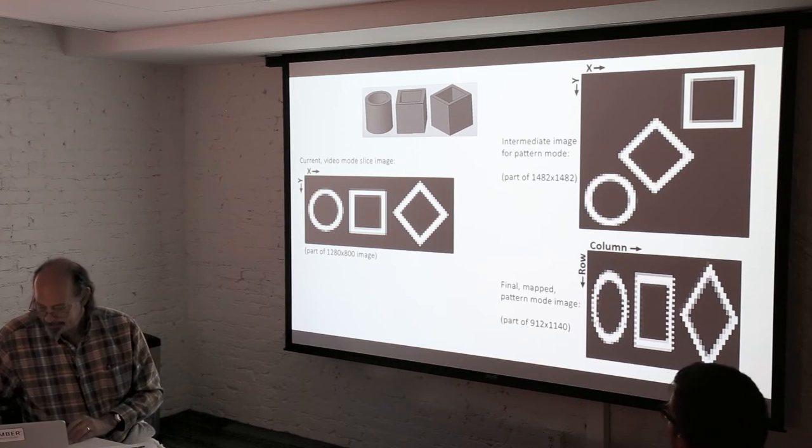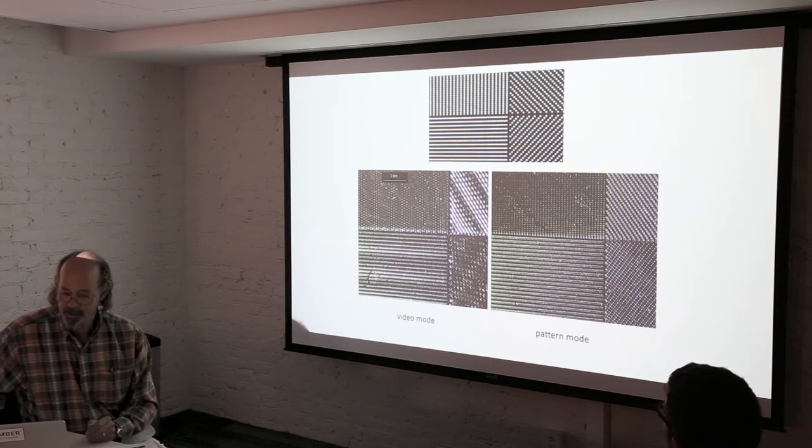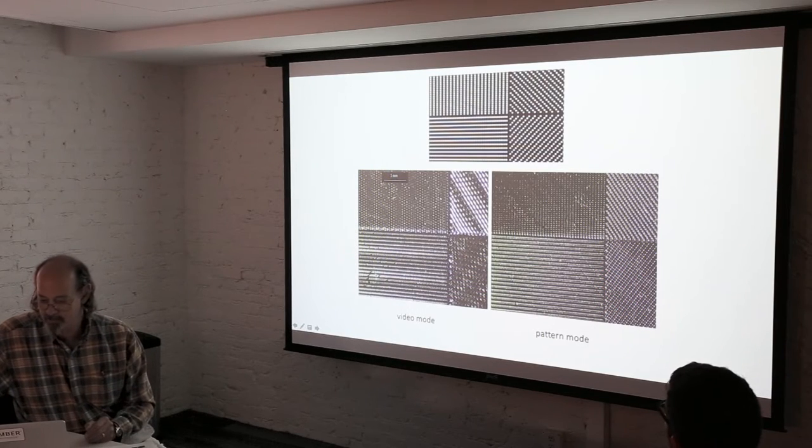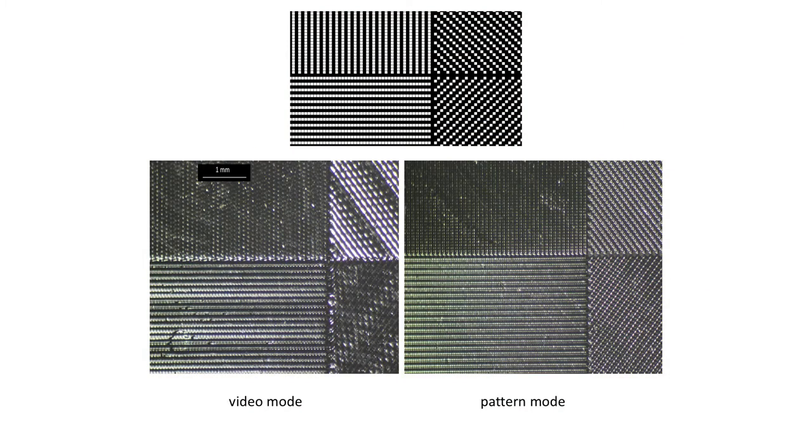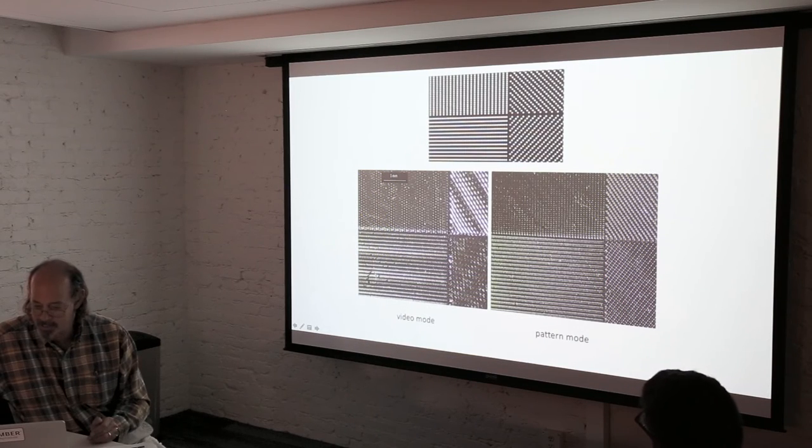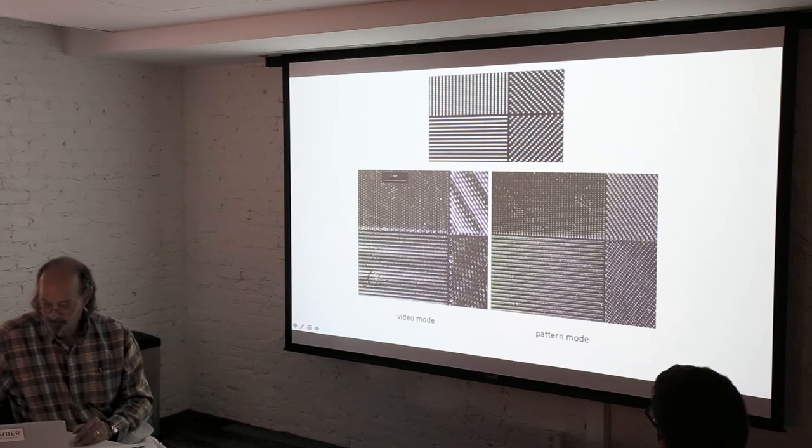All right, so what do we get for all this trouble? Well, we basically get higher resolution in pattern mode. Here is a slice image of alternating black and white pixels. And this is the way it looks when printed in video mode. This is the way it looks in pattern mode. Here you can see those beat patterns or aliasing artifacts that we get here as things are kind of smeared together. And the intensity of a pixel depends on where it is. For these diagonal lines, they get so smeared out that basically all that we print are some interference patterns. A moire, yeah.